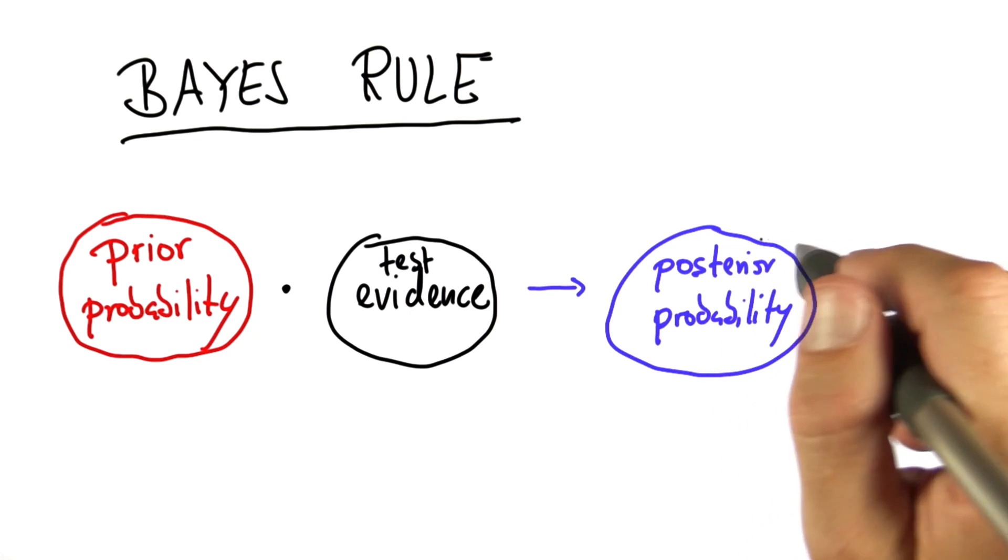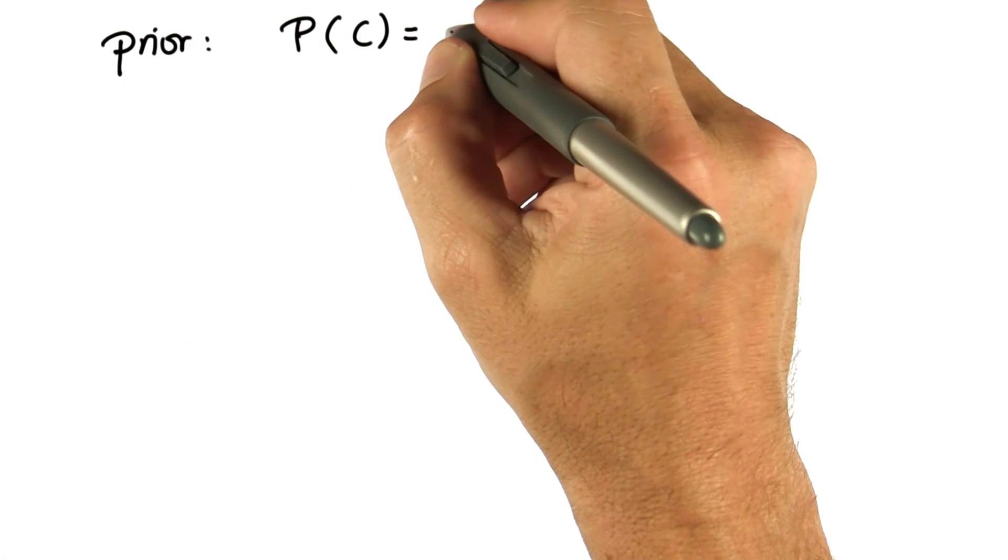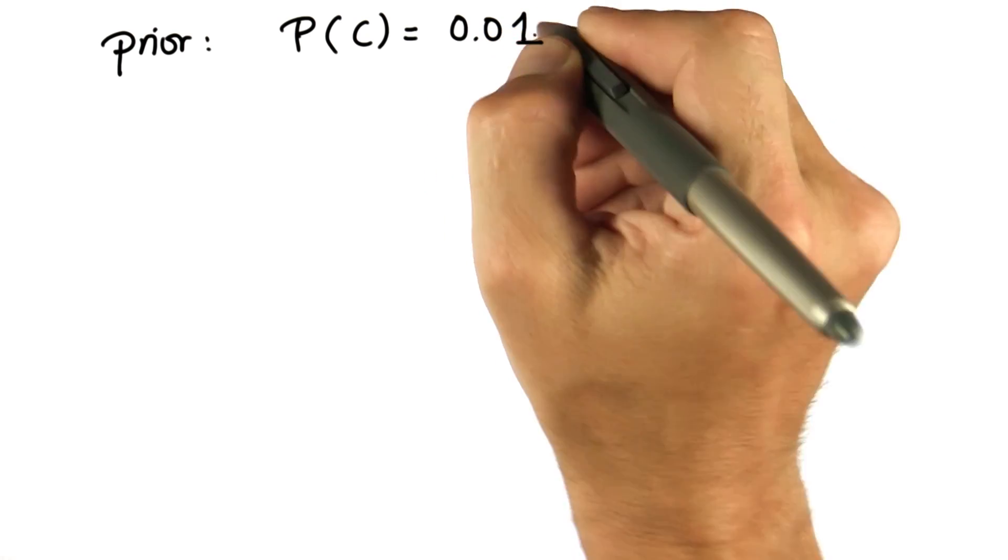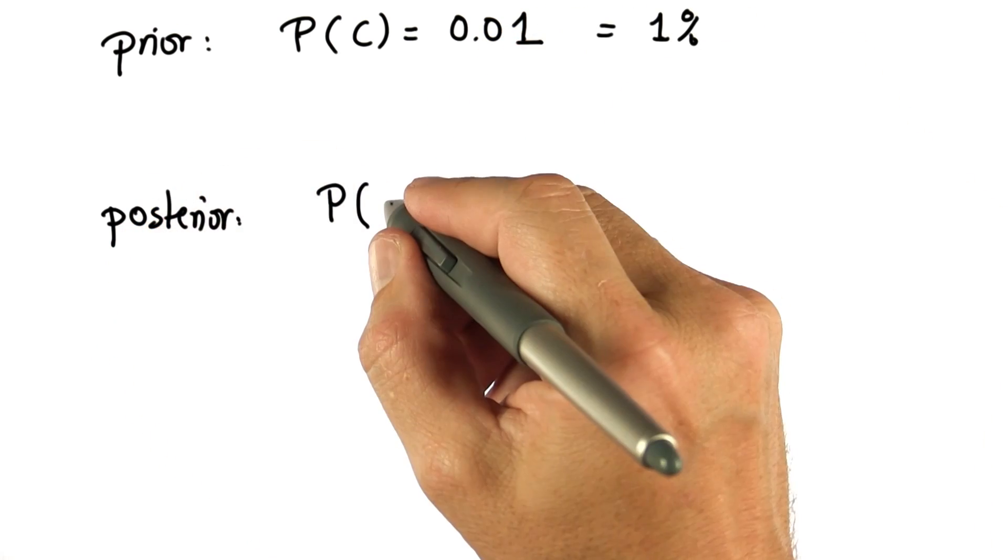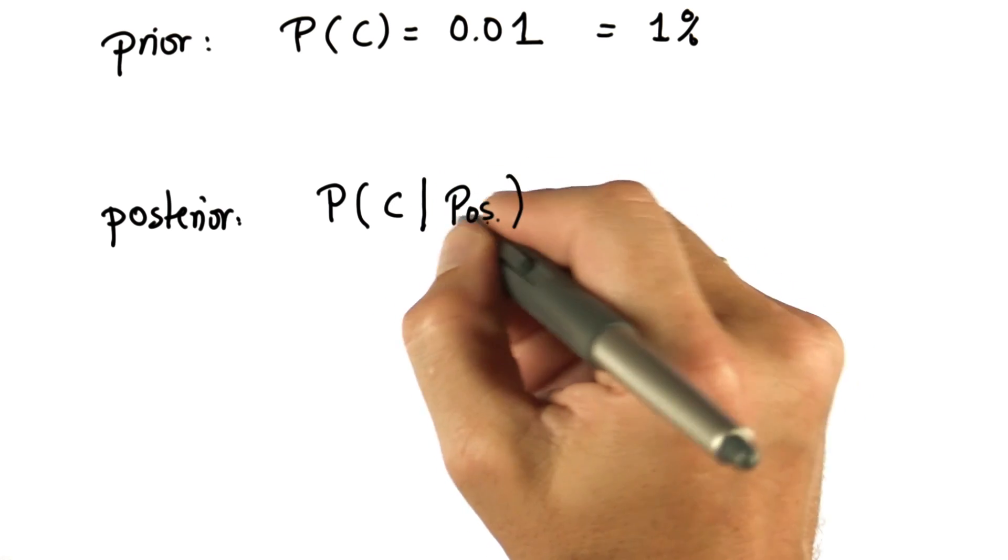So let's make this specific. In our cancer example, we know that the prior probability of cancer is 0.01, which is the same as 1%. The posterior of the probability of cancer given that our test is positive, abbreviated here as positive,